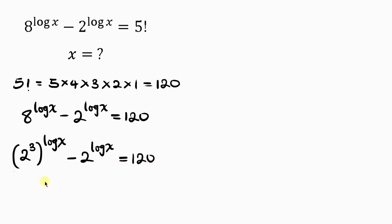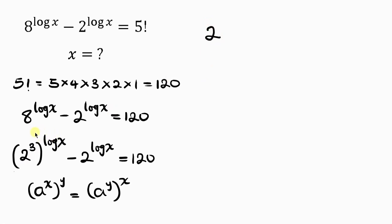Now we apply the law of indices, which says when you have a to the x raised to the y, the powers multiply. So this becomes 2 to the log x, raised to the 3 — bringing the power of 3 outside — minus 2 to the log x, equal to 120.